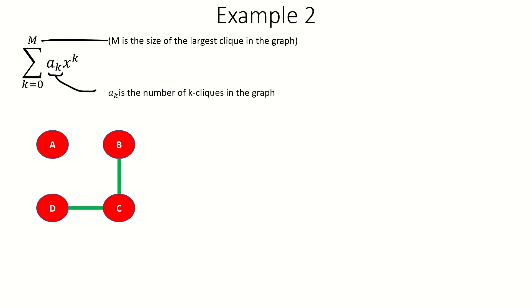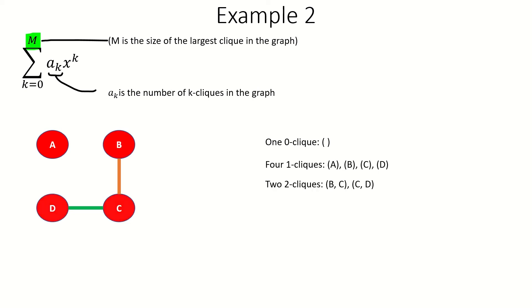The largest clique in this graph is a 2-clique, as there are no 3-cliques, so m is 2 in this case. This graph has one 0-clique, four 1-cliques, and two 2-cliques. So a sub 0 is 1, a sub 1 is 4, and a sub 2 is 2. Therefore, the clique polynomial of this graph is 1 plus 4x plus 2x squared.